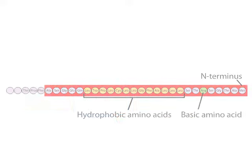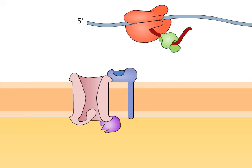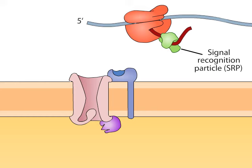As a signal sequence emerges from the ribosome, it is recognized and bound by a signal recognition particle, or SRP, consisting of 6 polypeptides and a small cytoplasmic RNA.